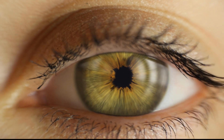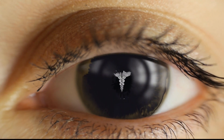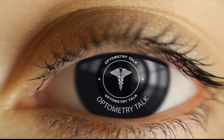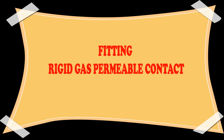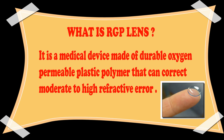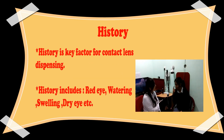Welcome to Optometry Talk. In this video, we'll be discussing the fitting of RGP contact lenses, known as rigid gas permeable contact lenses, which is an ophthalmic medical device made up of durable plastic that can help correct moderate to high refractive error. Initially, for assessing contact lens fitting, history is the most important factor.